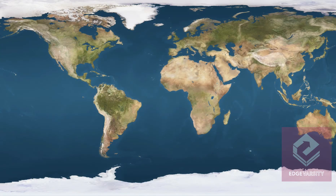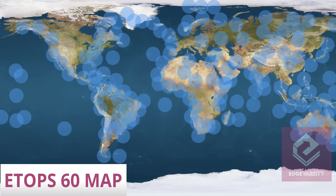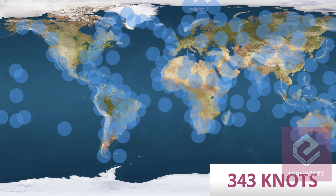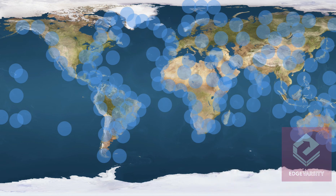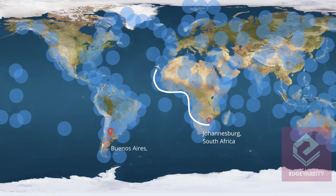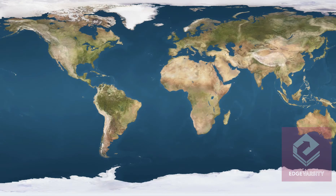Now let's see how the world map looks with changing ETOPS ratings. What you see now is how the ETOPS 60 map would look for an aircraft with an engine-out speed of 343 knots — meaning 343 nautical miles per hour. You can see there are a lot of gaps not covered by the 60 minutes bubbles. Can you imagine how long a route it would be for an aircraft to fly from Johannesburg, South Africa to Buenos Aires, Argentina under the ETOPS 60 rule?